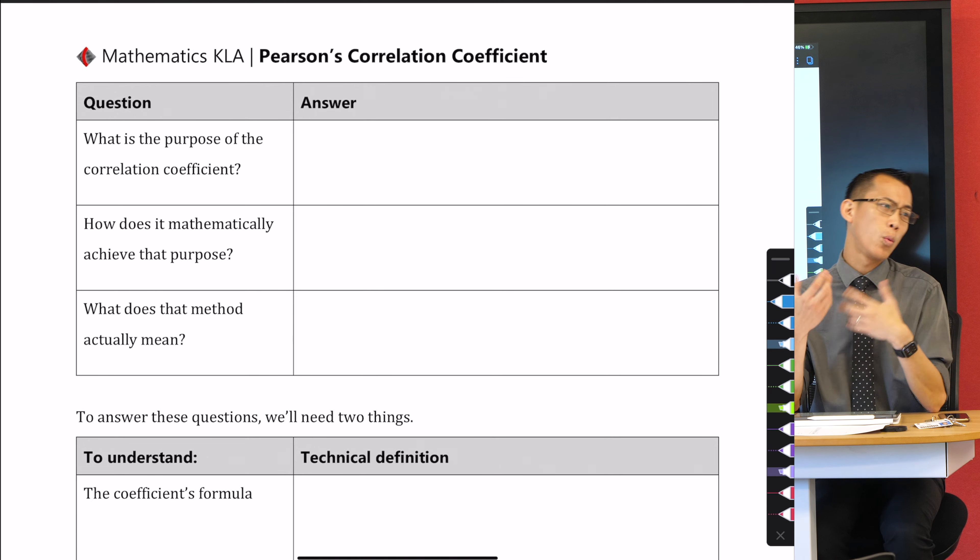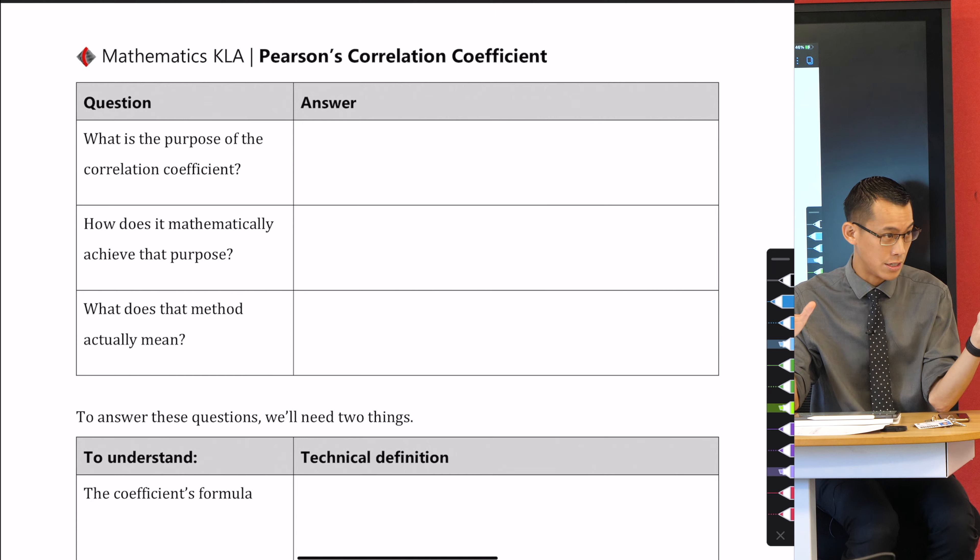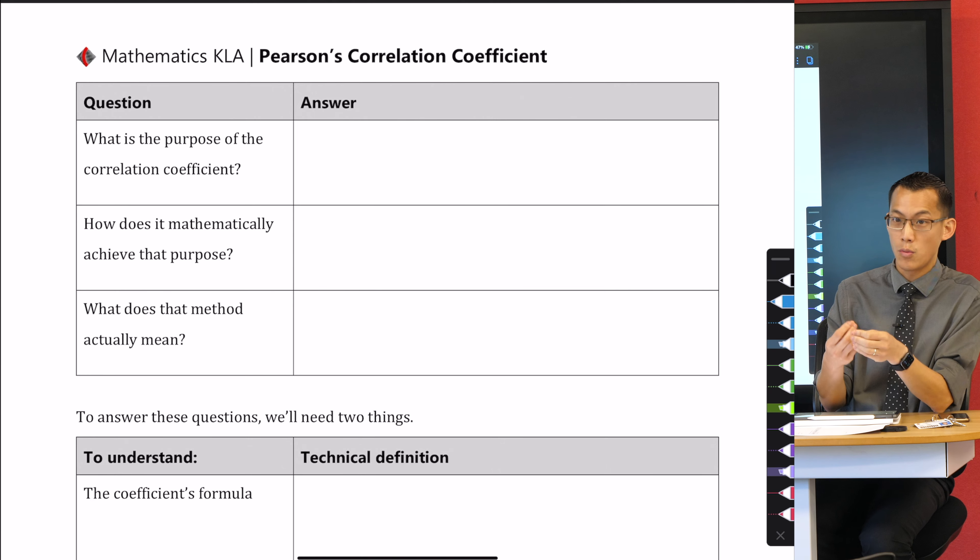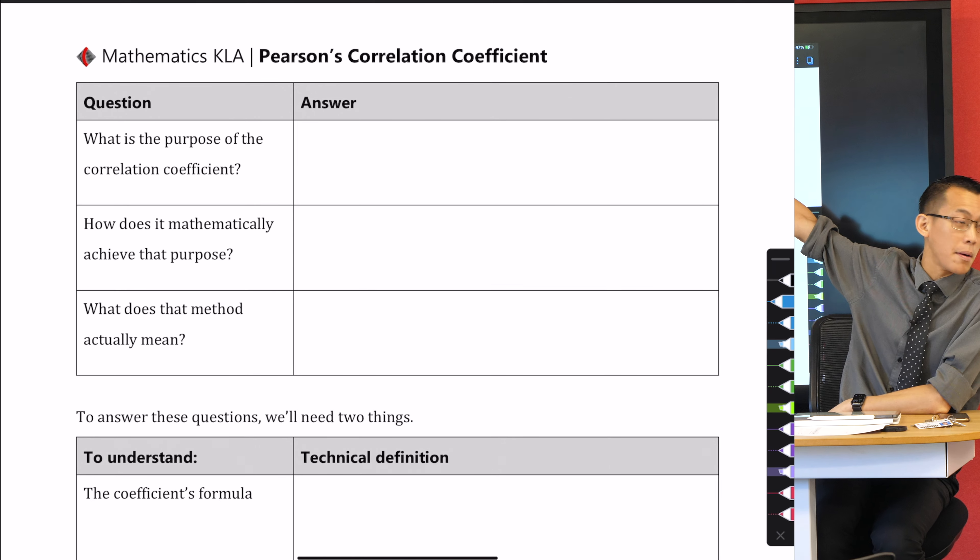What we want to do is better than just these vague words. We want specificity, we want numbers that we can use to compare, and that number that we're interested in is called Pearson's correlation coefficient.